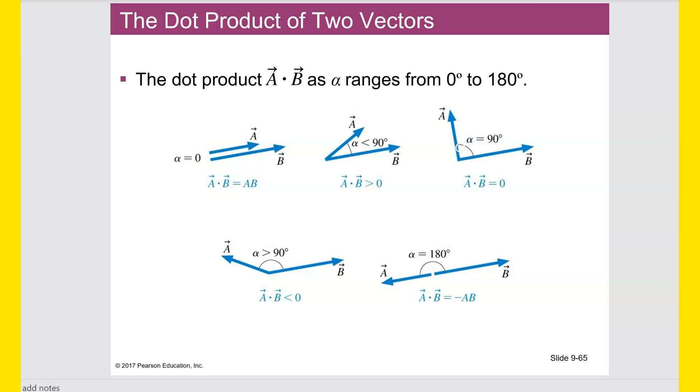If they point in a generally kind of same direction where, in other words, alpha is less than 90, the angle between them is an acute angle, then the dot product will be positive. If they are at a 90 degree angle, they're perpendicular, then actually that force would not cause any displacement over that displacement vector. And so the dot product would be zero. And cosine of 90 is zero, so it would make that happen.